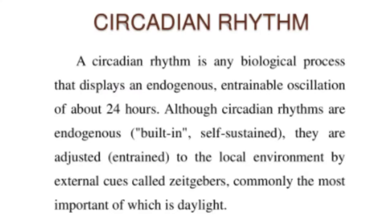Let's talk about circadian rhythm. A circadian rhythm is any biological process that displays an endogenous and trainable oscillation of about 24 hours. Although circadian rhythms are endogenous — built-in and self-sustained —